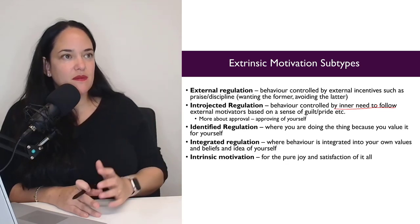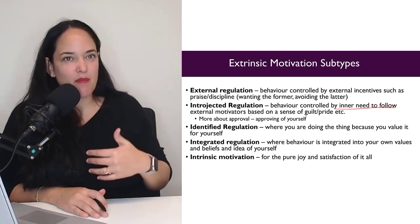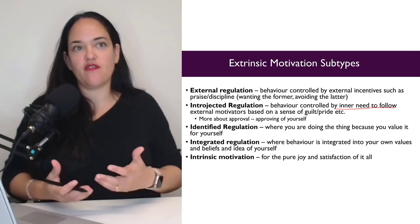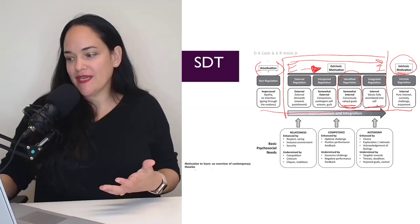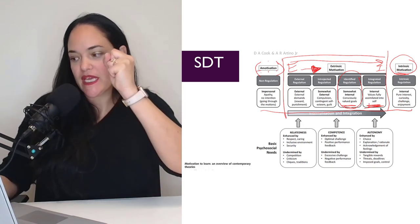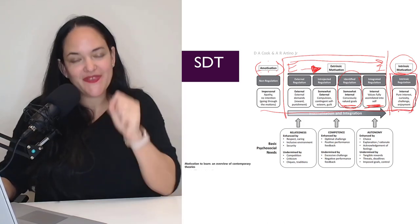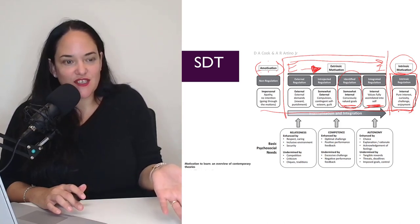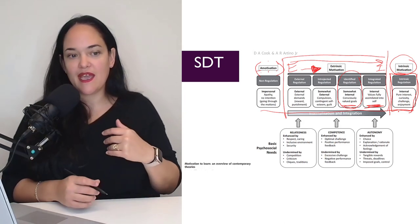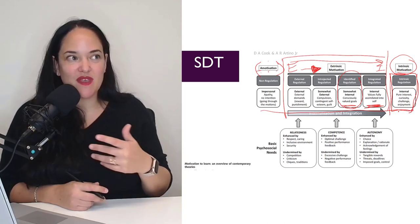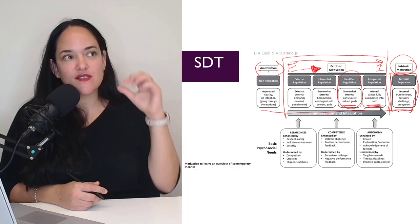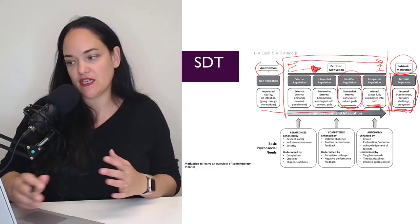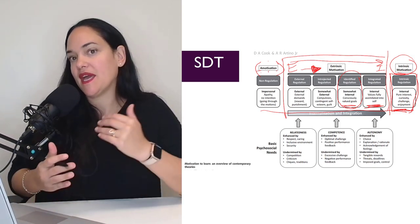With integrated regulation, you think of yourself as 'I am a healthy person, and a healthy person exercises.' It's almost automatic — it's just part of who you are. It's still slightly extrinsic because it's not purely about the joy of the activity. Intrinsic motivation is 'I love exercising — it's fun, I get to use my brain differently, and intense exercise is one of the only things that shuts my brain off.' It's the joy of the behavior itself.